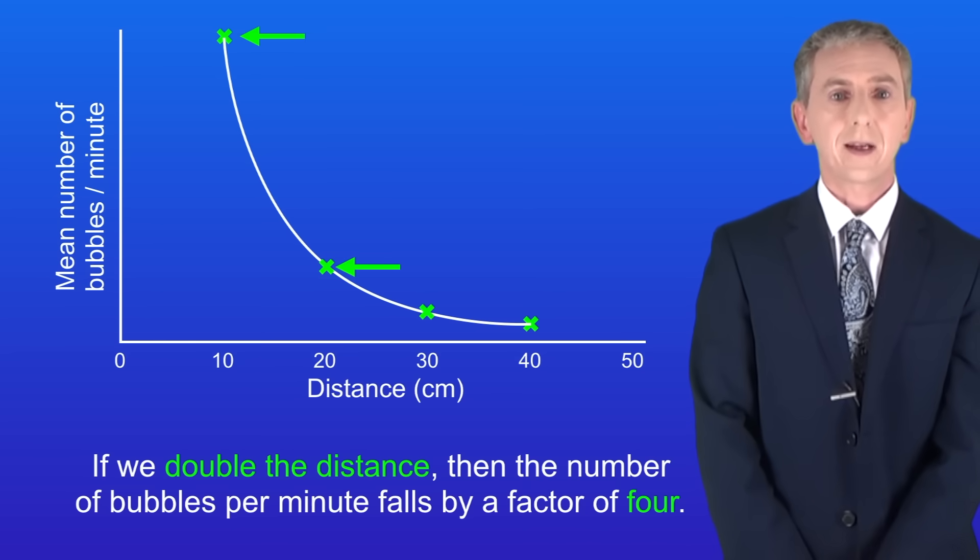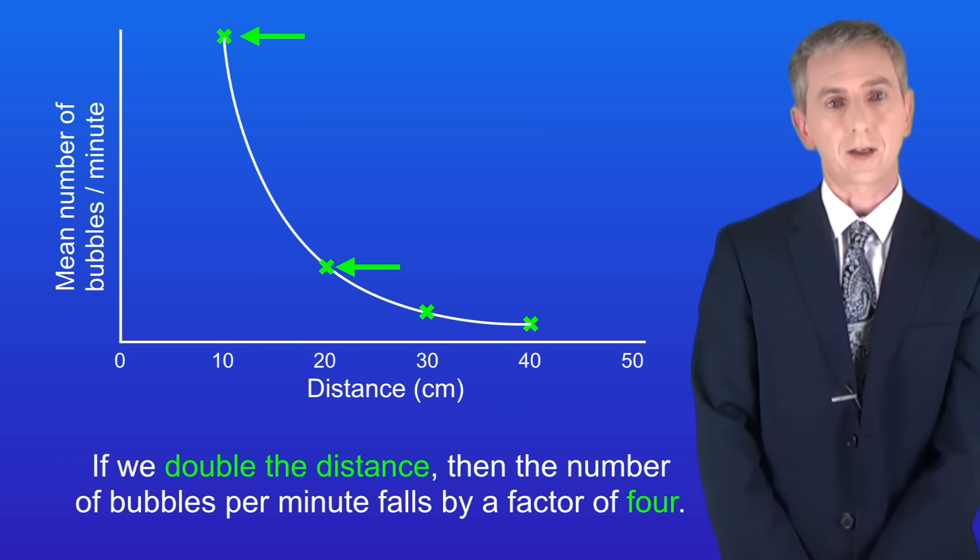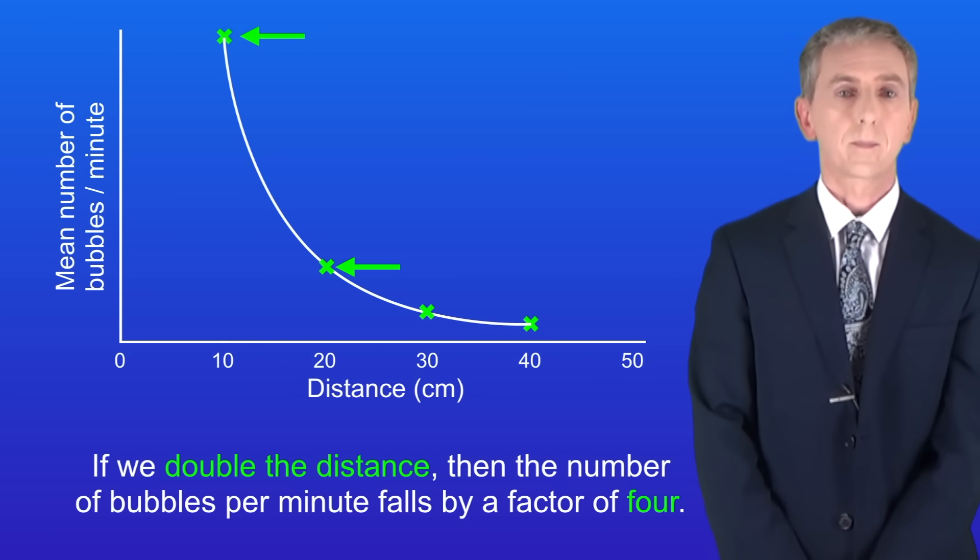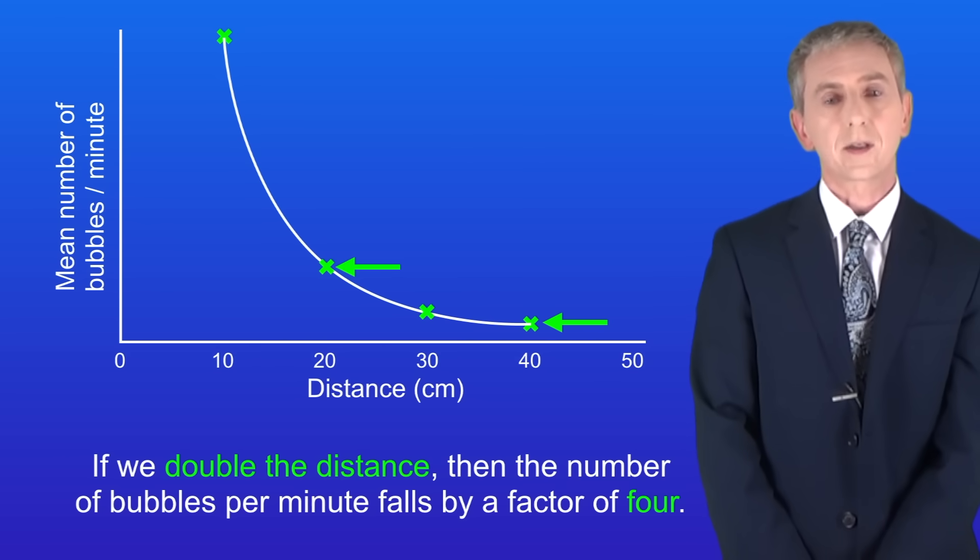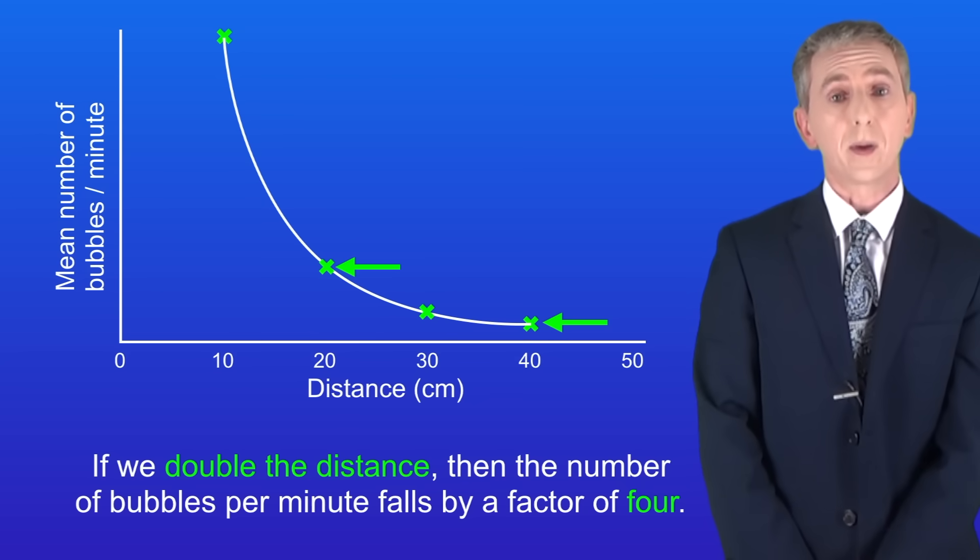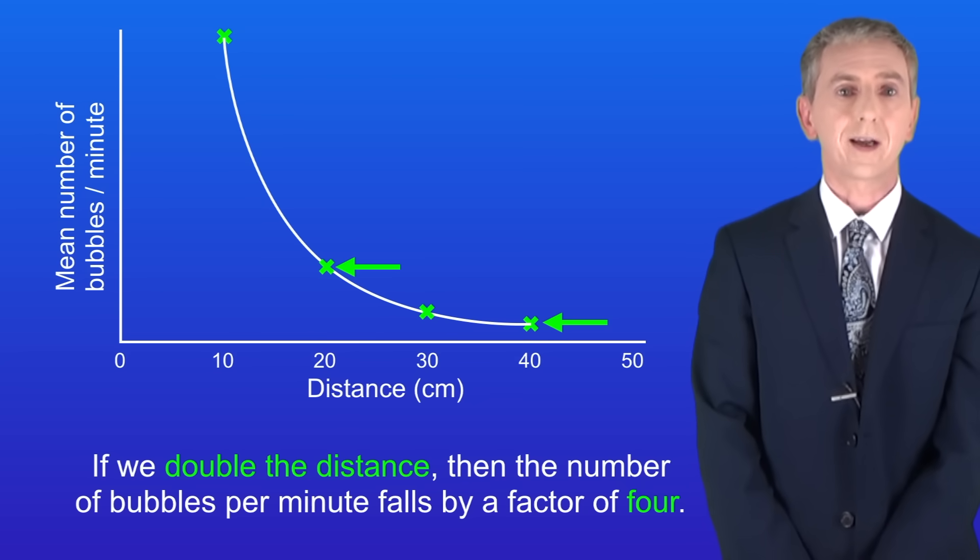Going from 10 centimeters to 20 centimeters causes the number of bubbles per minute to fall by four times. Going from 20 centimeters to 40 centimeters the number of bubbles per minute again falls by four times.